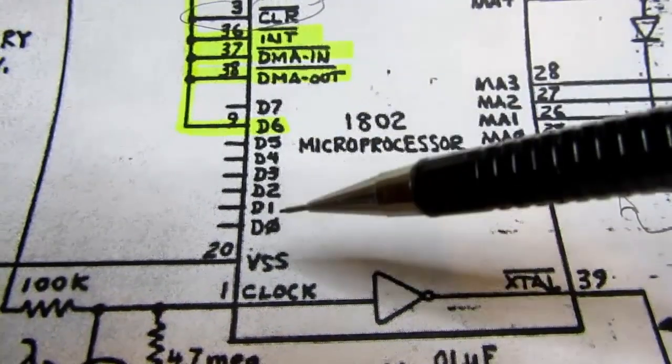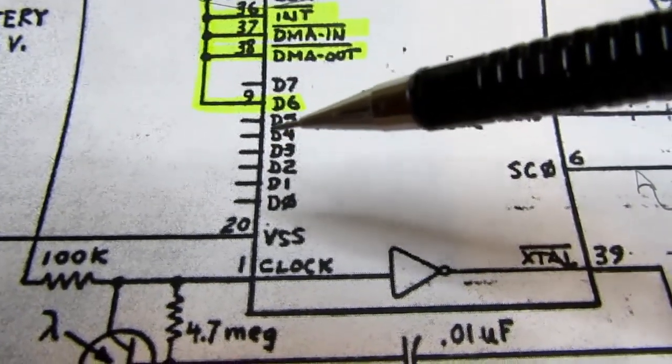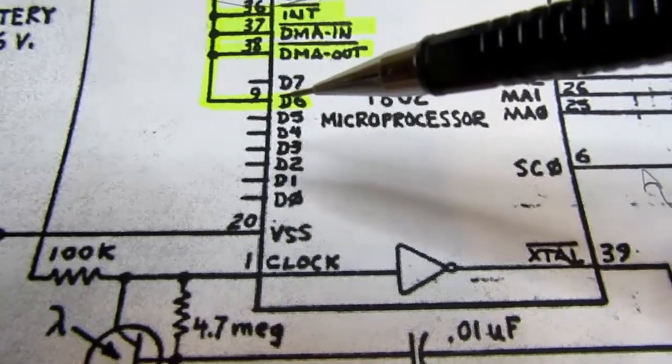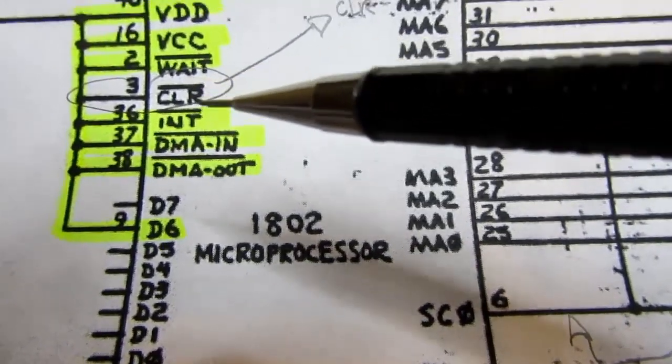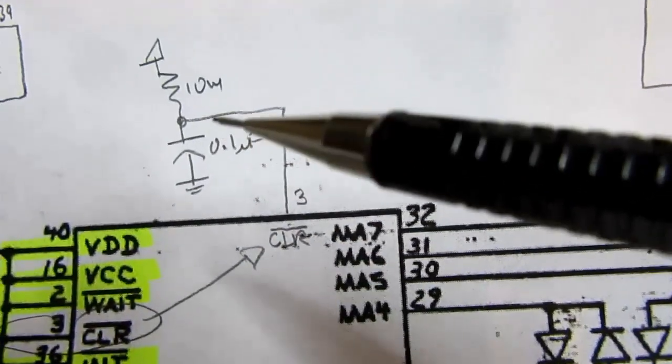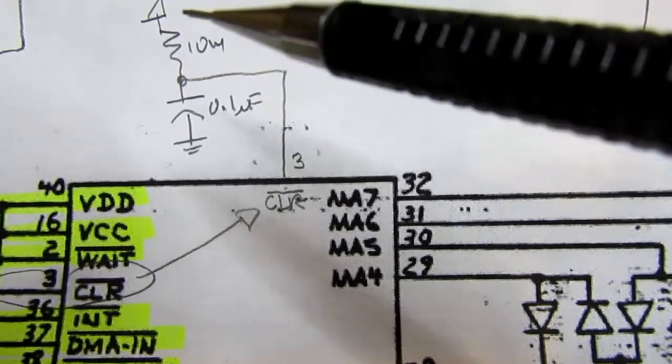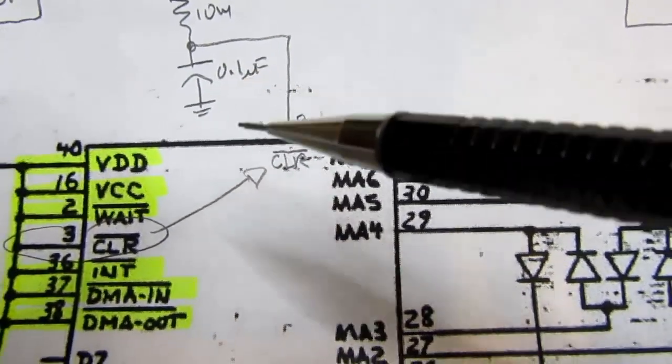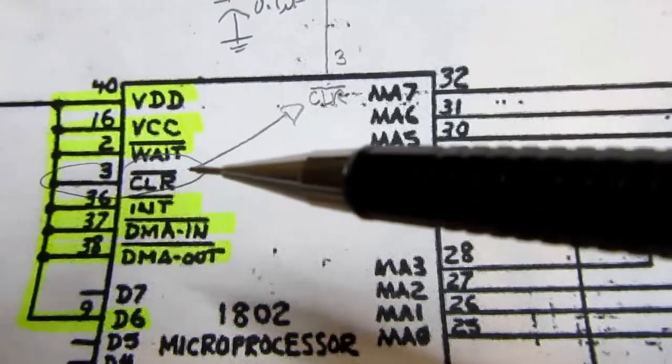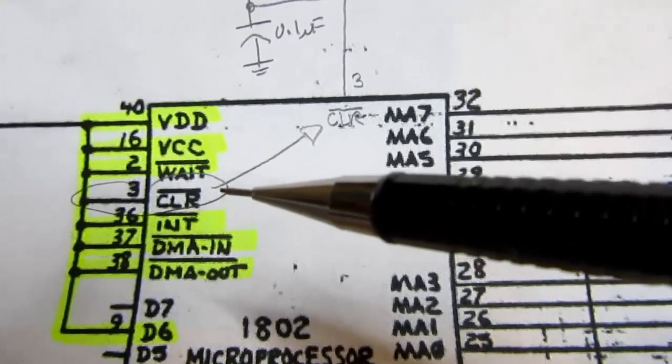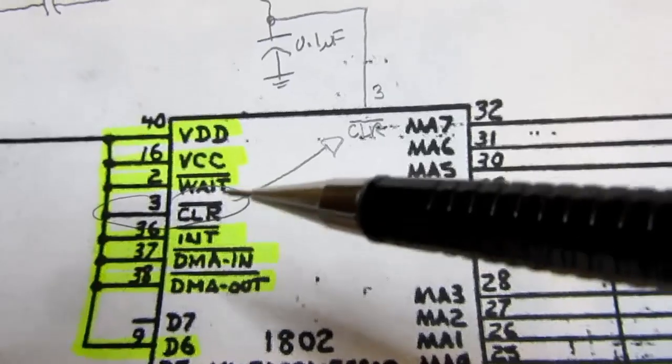And then we have the eight pins of the data bus, which can be either inputs or outputs. But we're going to leave those floating except for one, and I'll talk about that later. There's also a clear input, also active low, which normally I would do something like this with. Just have a capacitor to ground, small value, a pull-up resistor, so that on power-up it clears the processor back to its default starting state. To minimize the number of components, I'm not going to do this. I'm just going to tie this high so it's not doing a clear.